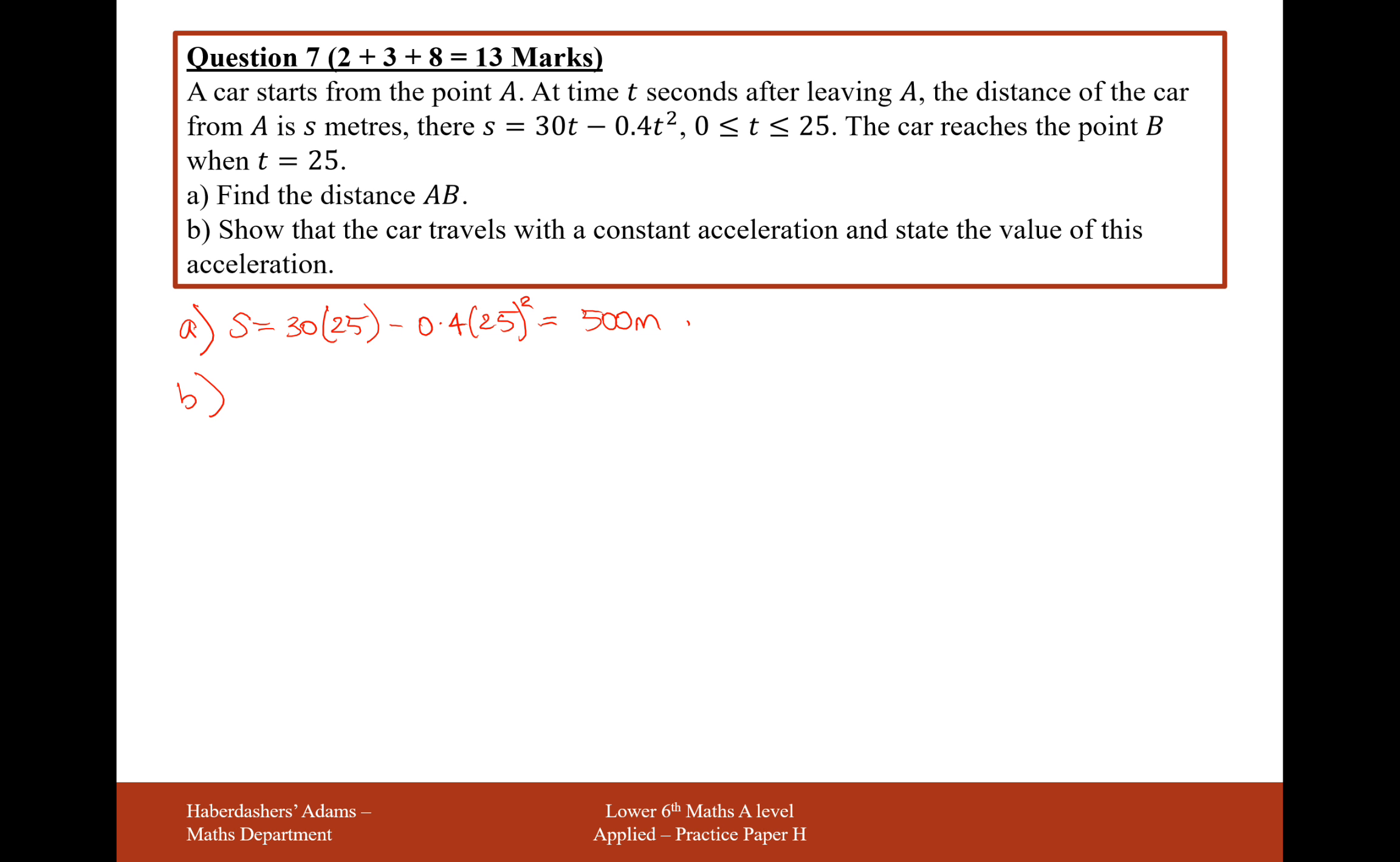Show that the car travels with constant acceleration and state the value of this acceleration. We're going to have to use differentiation to help us get to the acceleration. Remember V is the differentiation of distance with respect to time, and acceleration is the differentiation of velocity. So V equals ds by dt. We're going to differentiate and get 30 minus 0.8t.